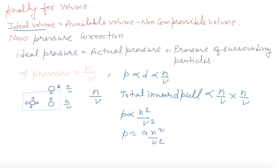Now, the ideal pressure becomes P plus A N square by V square. So, finally he had given, this is the correction in the pressure he has made.